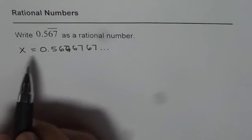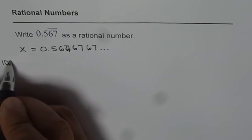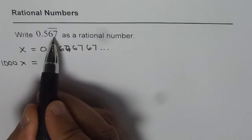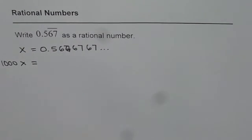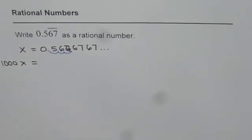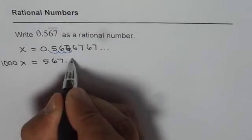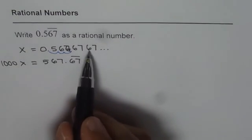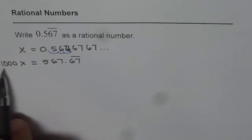In that case, what will be 1000 times x? Why am I writing 1000 times x? Since I want 67 to be on the left side of decimal. So when I multiply this by 1000, the decimal moves 3 places. And what I get is 567.67 repeating. I can write like this, repeating. That was for you to understand that it repeats. Now that is 1000 times x.